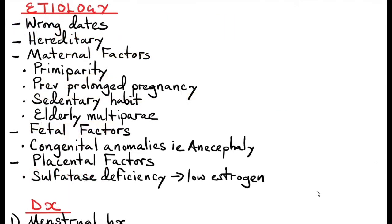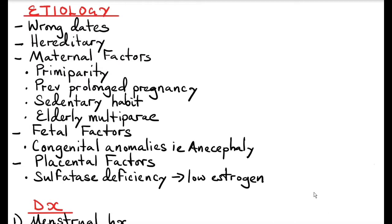As long as the mechanism in initiation of labor remains unknown, the cause of post-dates also remains unknown, but certain factors have been associated with post-dates. Some of the factors that contribute to post-dates are wrong dates, due to inaccuracy of the last menstrual period. Some patients don't remember their last menstrual period. It can also be hereditary — it's in the family.